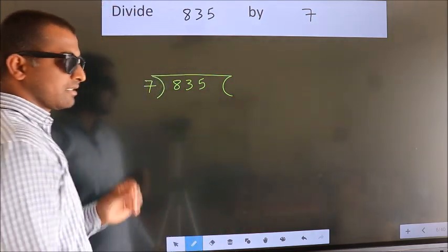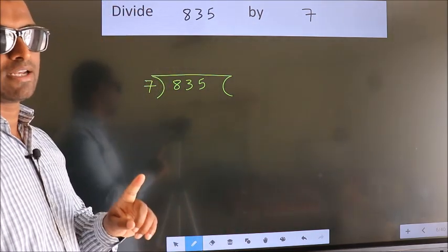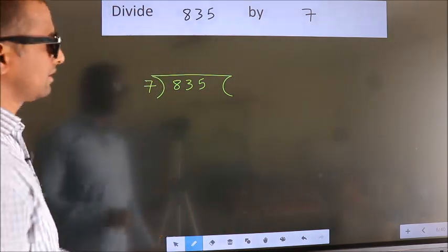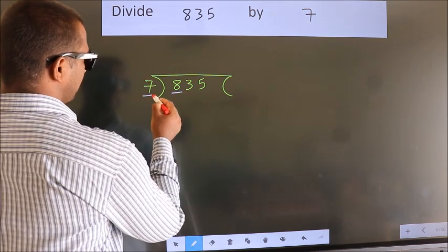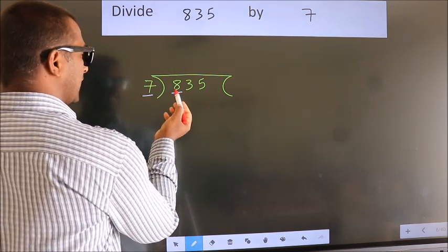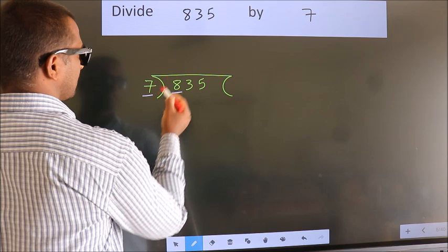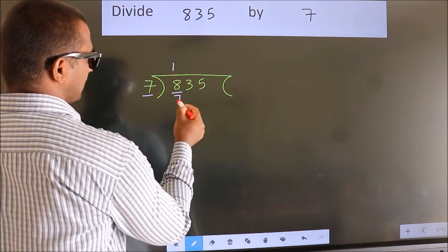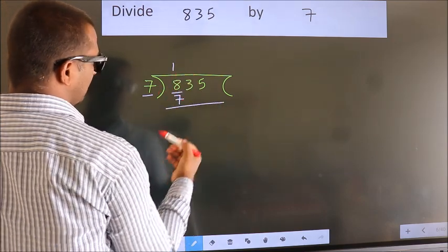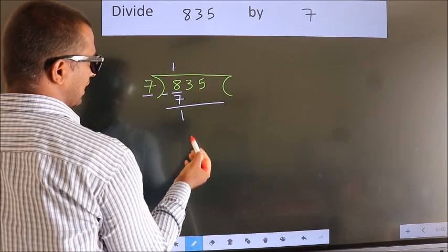This is your step 1. Next, here we have 8, here 7. A number close to 8 in 7 table is 7 times 1 is 7. Now, we should subtract. We get 1.